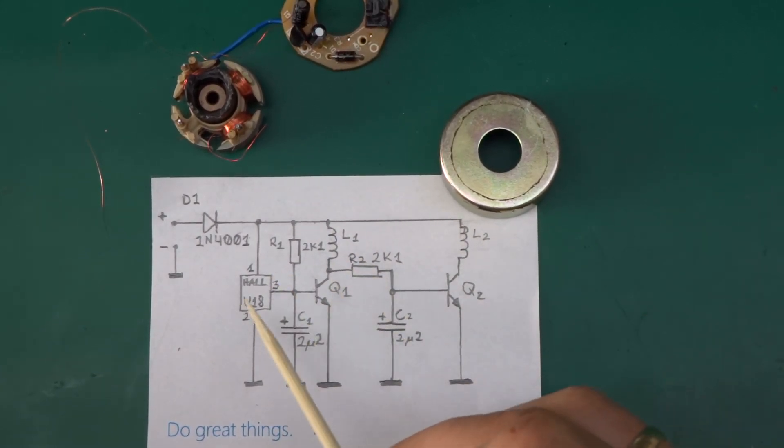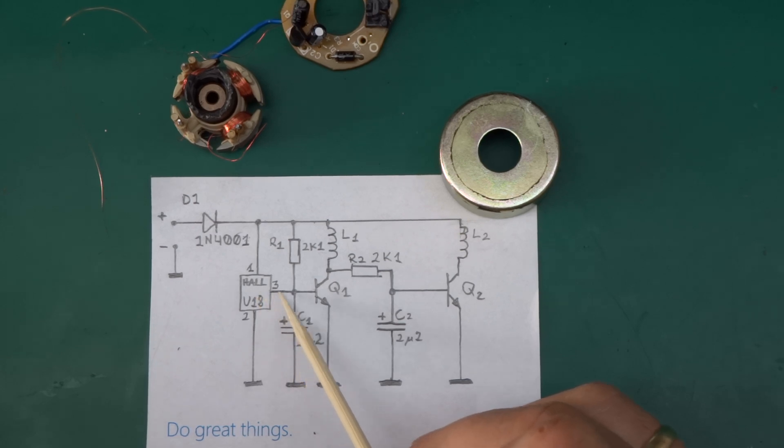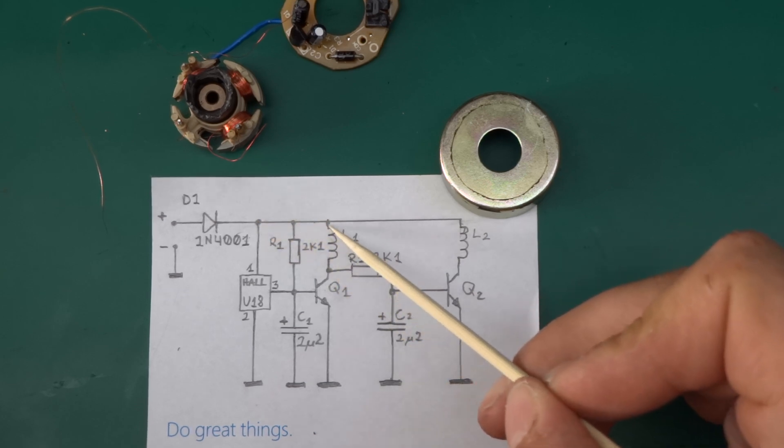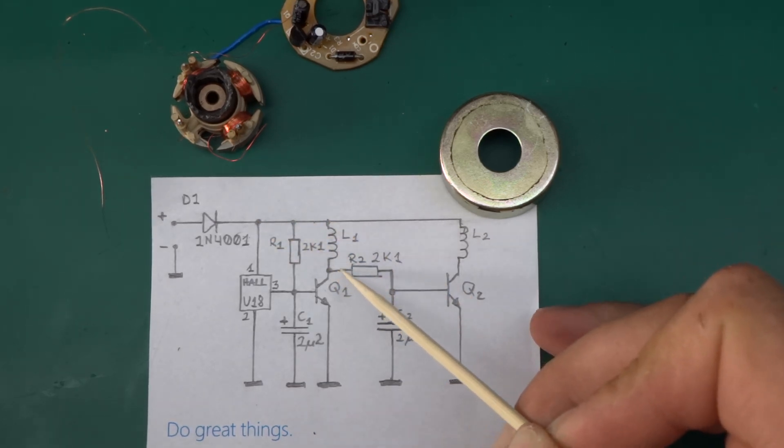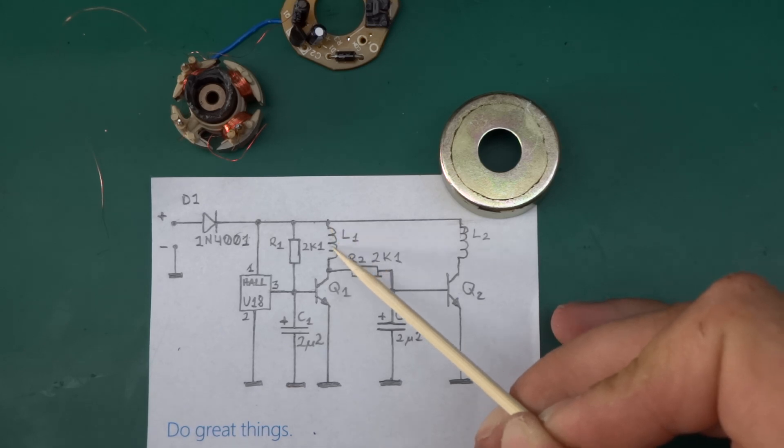At that point the Hall effect sensor kicks in and it pulls the base down to the ground. This slowly starts discharging the cap because it's putting out low, switches off this transistor. Then this transistor gets switched on by current going through the coil for the windings of the motor and another 2.1k resistor.